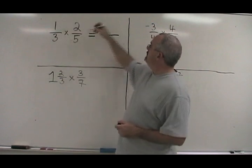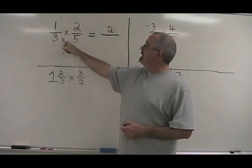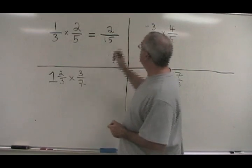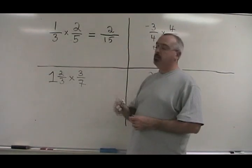1 times 2 is 2. 3 times 5 is 15. So 2 over 15 is the answer to this question.